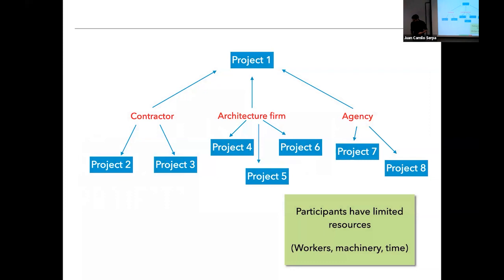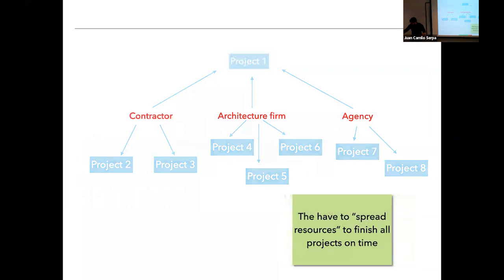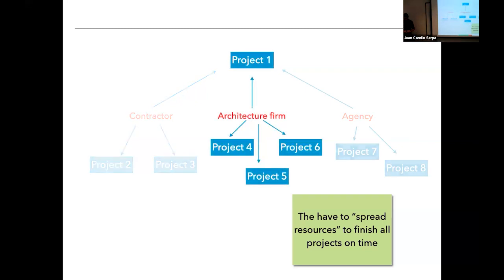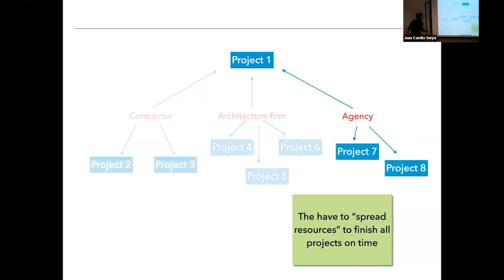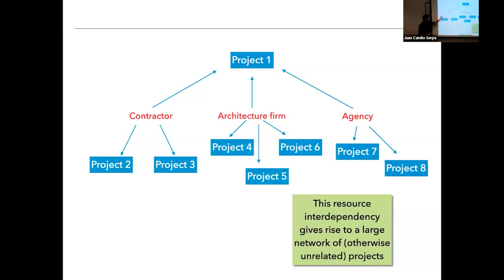Because these participants have limited resources — their workers, their machinery, their time — they need to spread these resources to finish all projects on time. They are making self-interested decisions to allocate resources so that they finish each project in their own portfolio on time and without delay. This contractor wants to spread resources so that projects one, two, and three finish on time. This resource interdependency gives rise to an interconnected network of projects — what we call in this paper a project network.